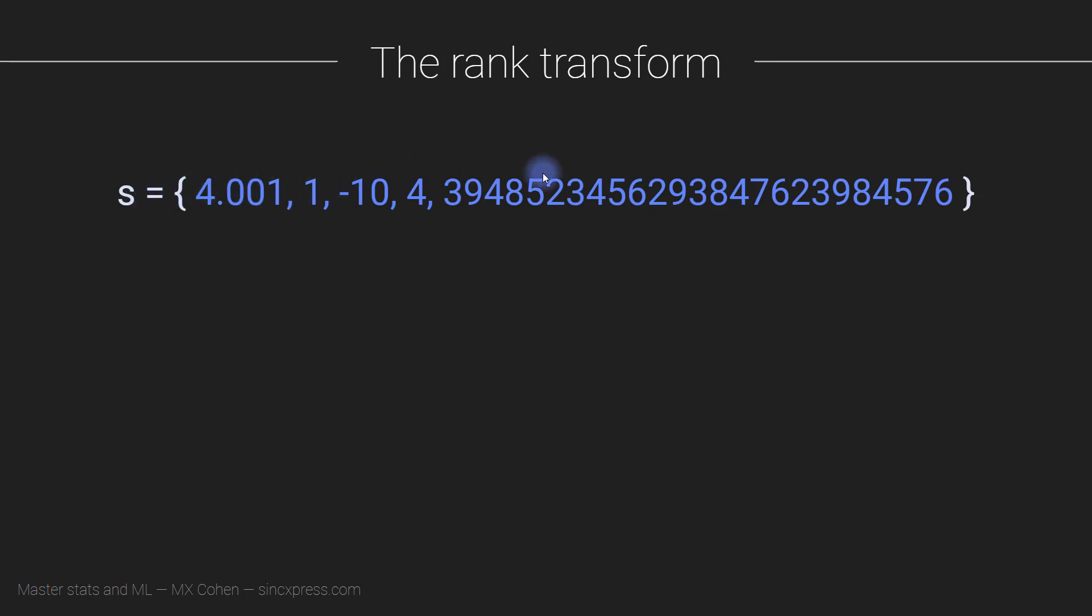Let's start with a set of numbers. This is just a collection of five numbers: we have 4.001, 1, minus 10, 4, and some ridiculously huge number. I don't even know what this number means—this is like the number of atoms in a glass of water or something. This is the set, and this is the rank transform of the set. So what do these numbers mean?